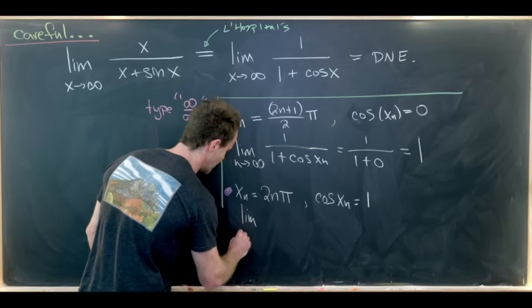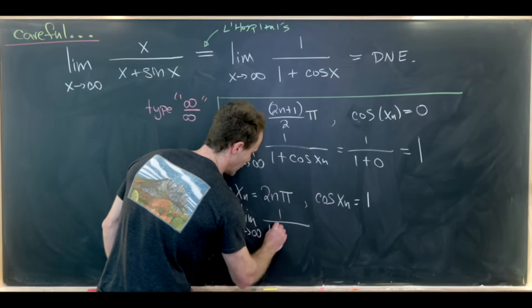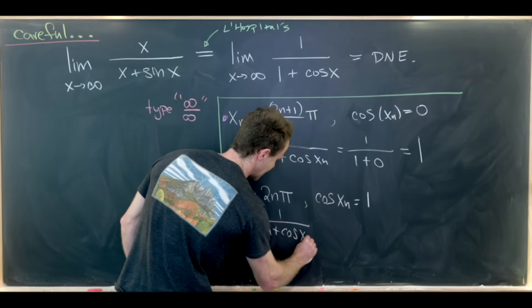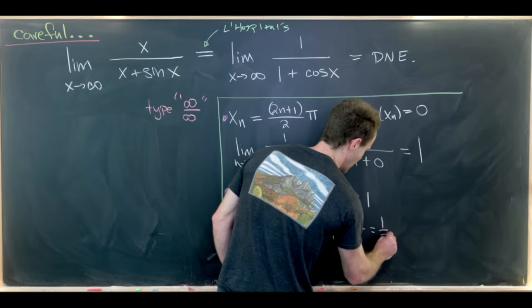But now if we take this sequential limit, the limit as n goes to infinity of 1 over 1 plus cosine of x sub n, in this case will give us 1 over 1 plus 1, which is 1 half.